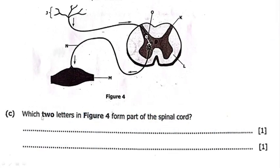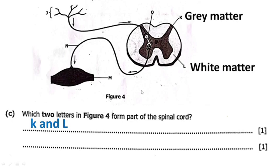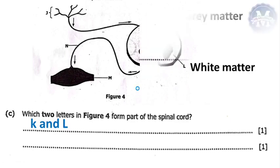This is our question C. Our question C reads, which two letters in figure 4 form part of the spinal cord? We are looking for two letters in this figure 4 that form part of the spinal cord. The letters that form part of the spinal cord, we have letter K and letter L. Letter K right here, this is the gray matter and letter L, this is the white matter. I have answered our question C. We now move on to our next question.